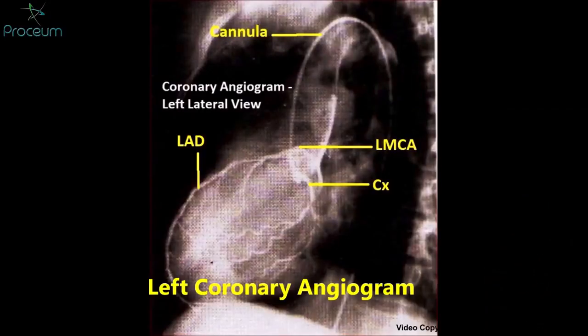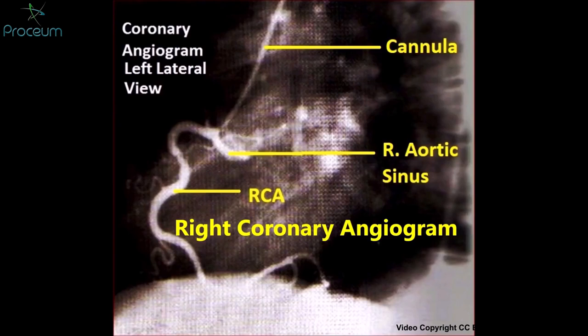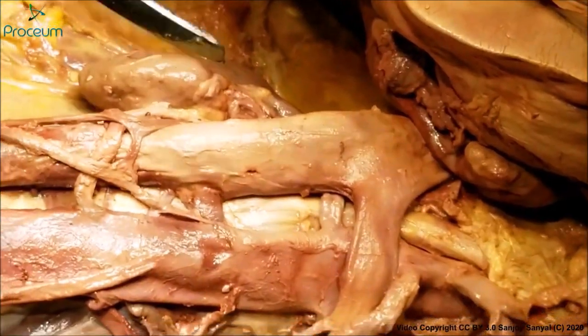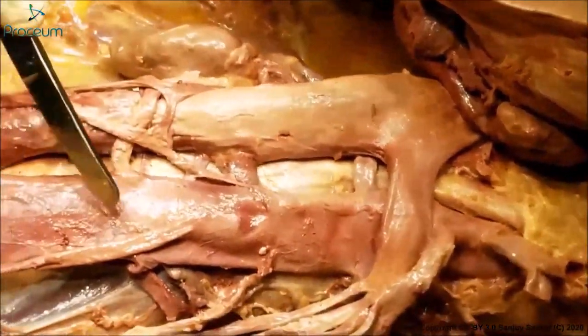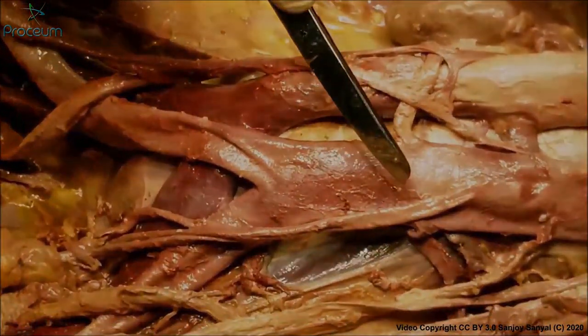This is a left coronary angiogram to show the left anterior descending and the left circumflex. And this is an RCA angiogram to show the right coronary artery. So this is a very useful application of the aorta and its angiograms.